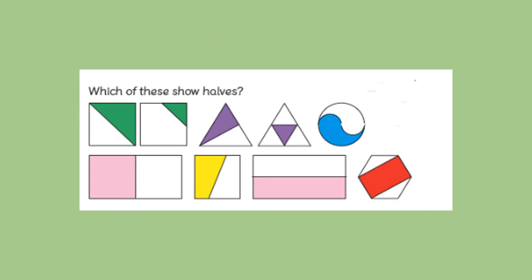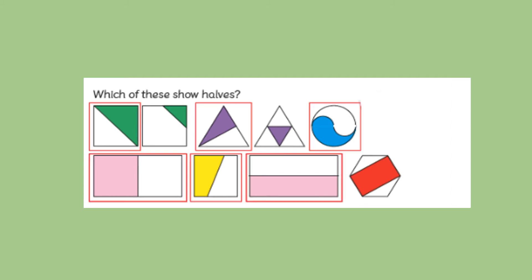Have a look at these pictures. You can see that all of the pictures are in pairs but which of these show halves? How did you get on? Remember if a shape is going to be showing halves then that means that both sides of the line need to be exactly the same size. Two equal parts.